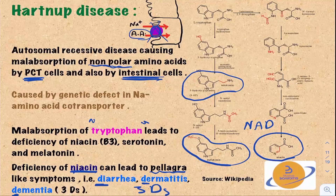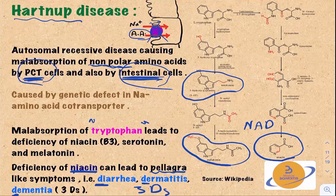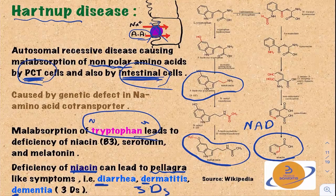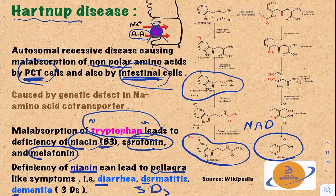So bottom line, Hartnup disease affects the proximal convoluted tubule cells and the intestinal cells, leading to deficiency of nonpolar amino acids, most importantly tryptophan. The deficiency of tryptophan leads to deficiency of niacin (B3), serotonin, and melatonin. The deficiency of niacin leads to the three Ds: diarrhea, dermatitis, and dementia.